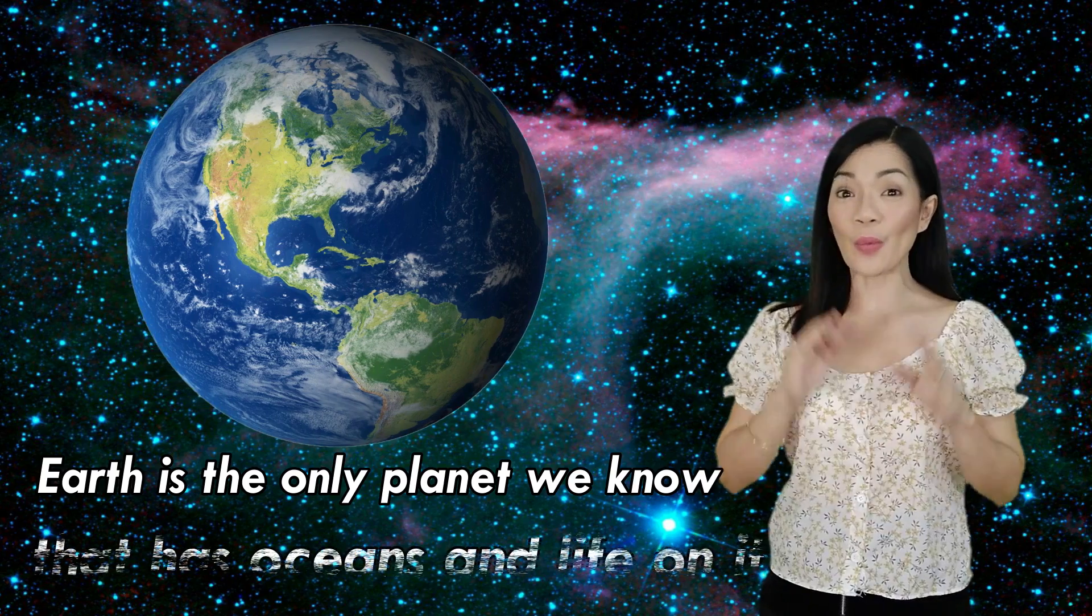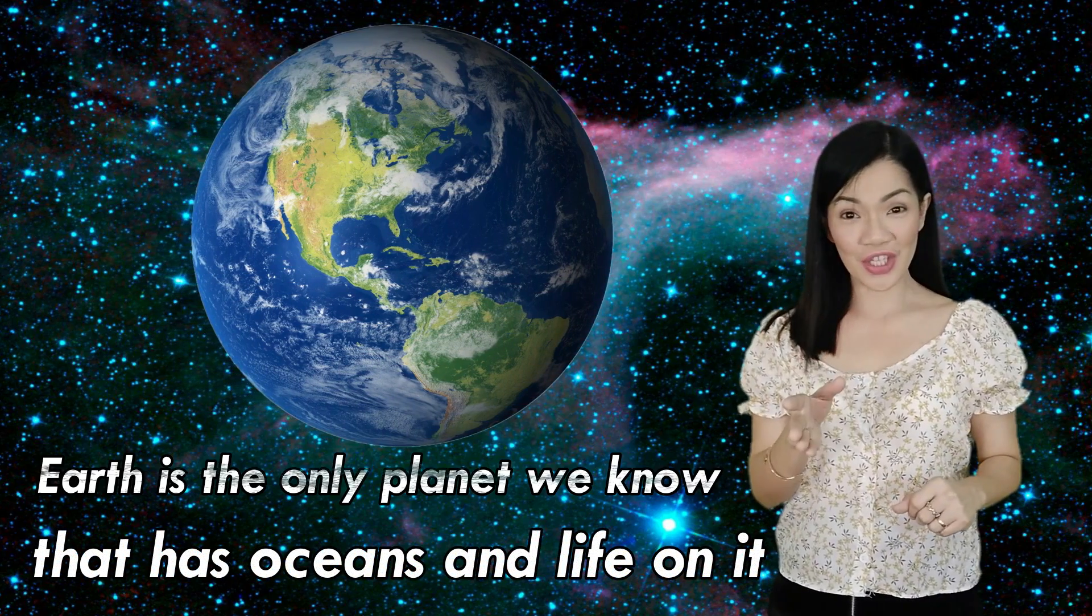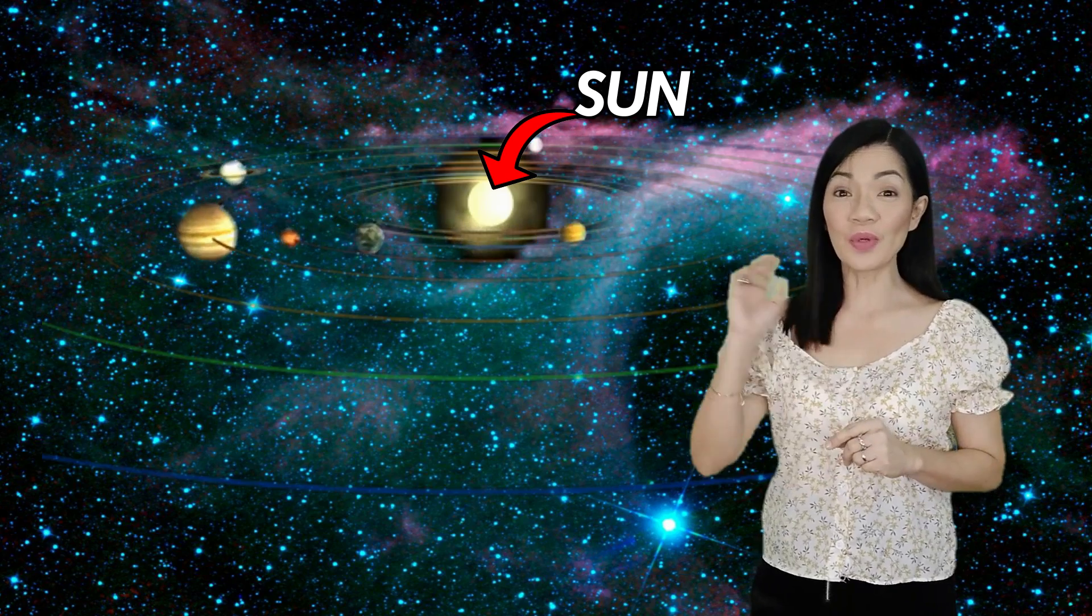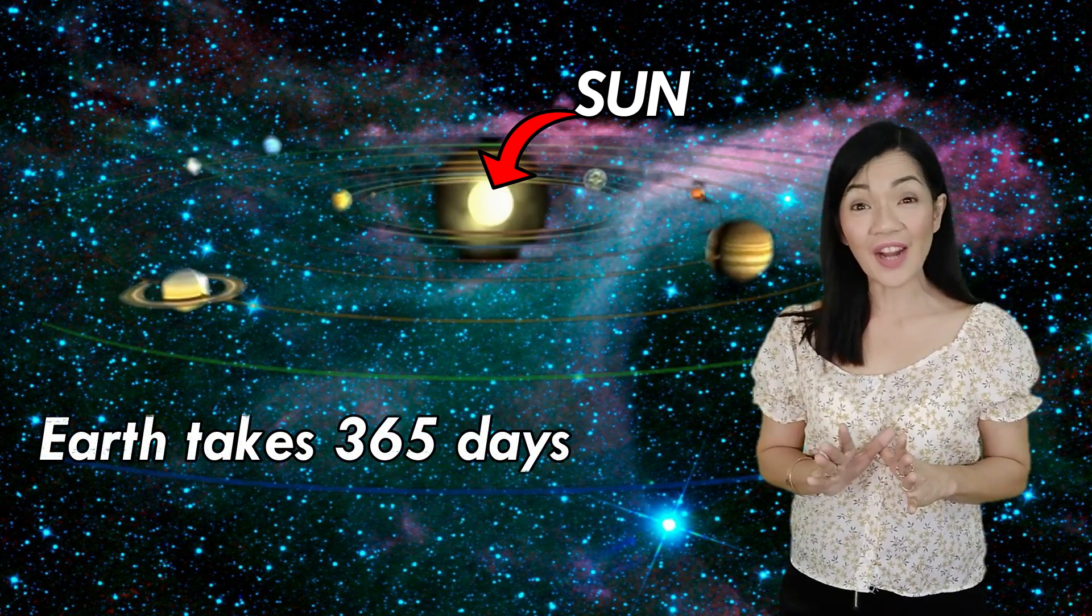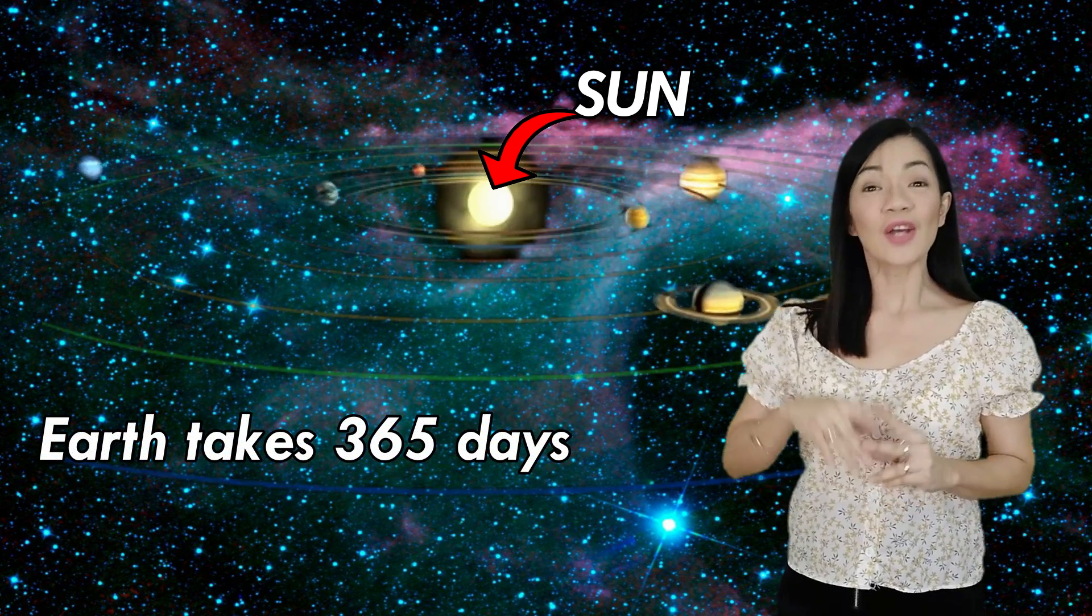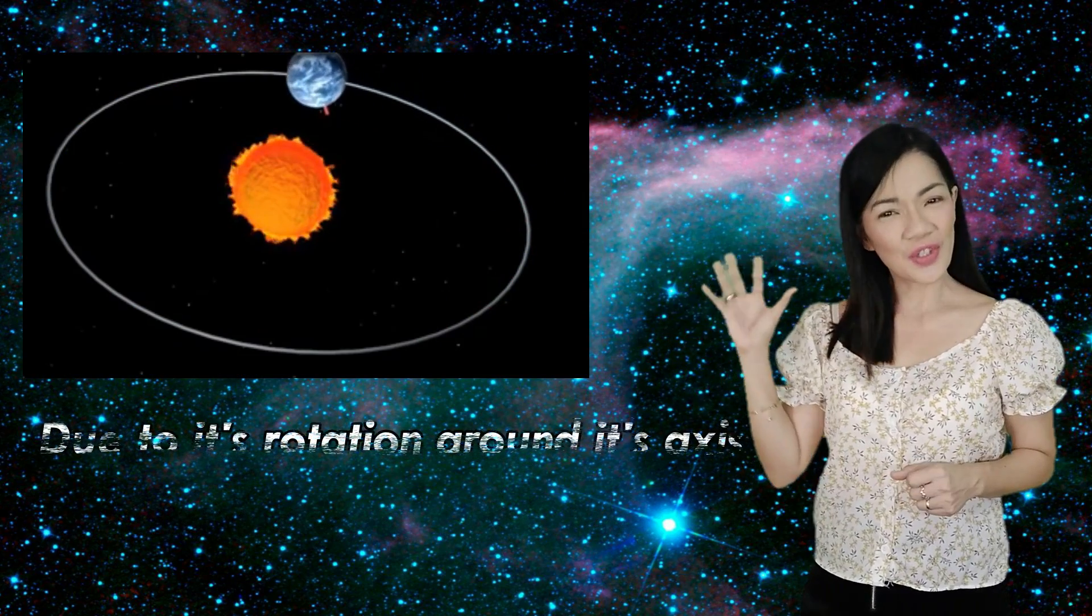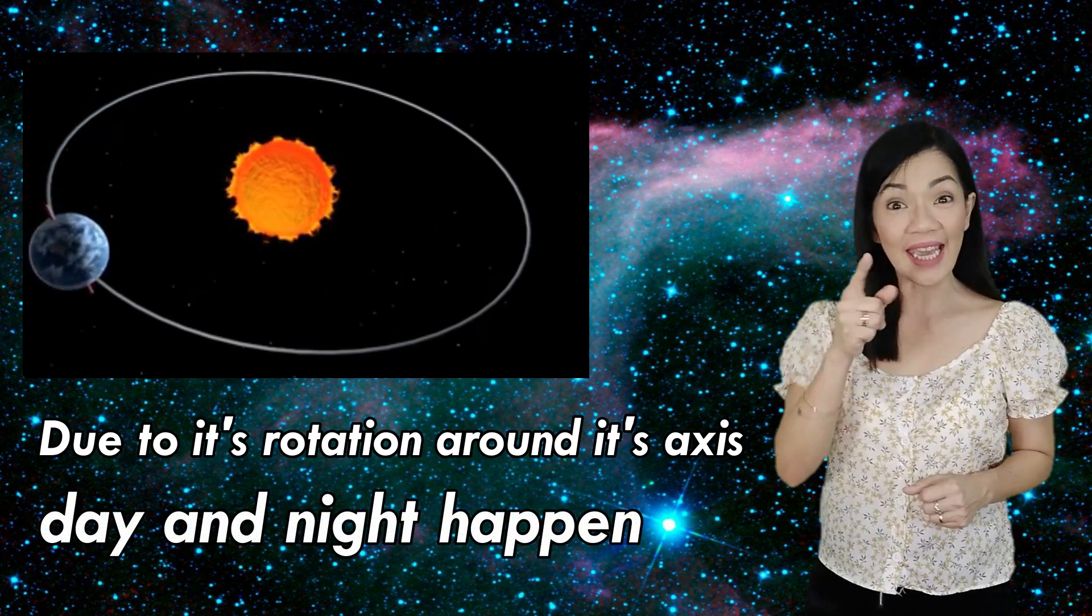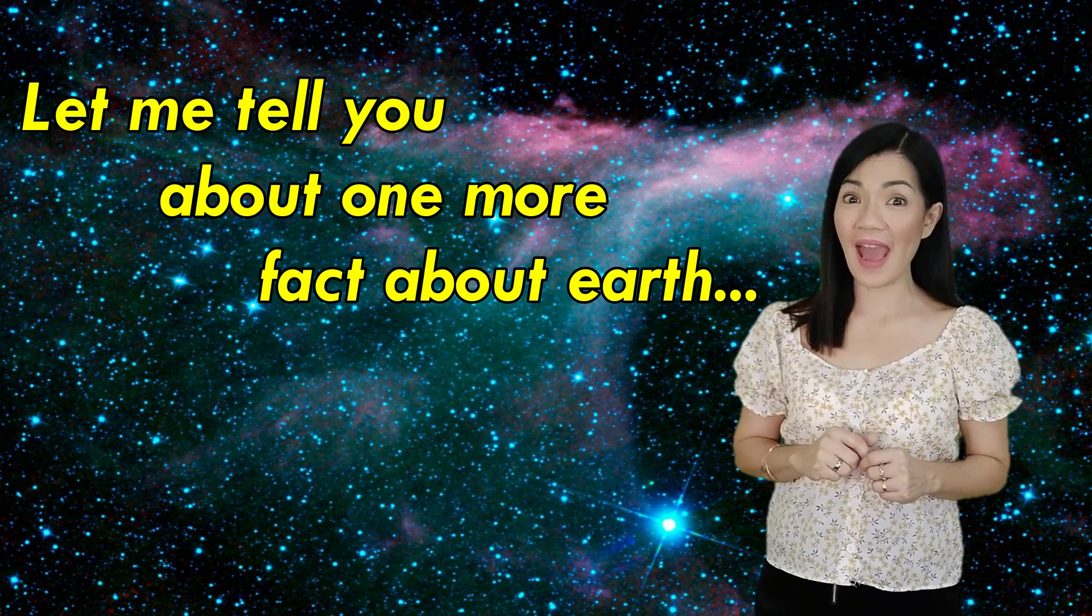Earth is the only planet we know of that has oceans and life on it. You see those blue portions on Earth's body? Those are all oceans and seas. And the green portion is the land where we live. Like the other planets, Earth also moves around the sun. It takes 365 days to rotate around the sun. It also keeps rotating. Due to its rotation around its axis, day and night happen.